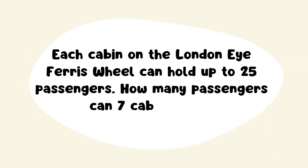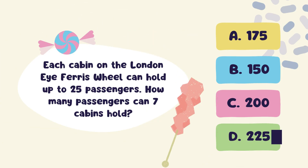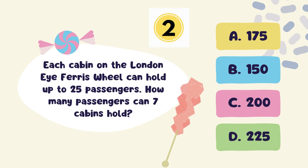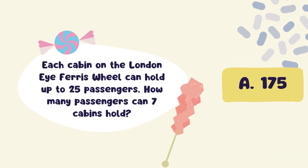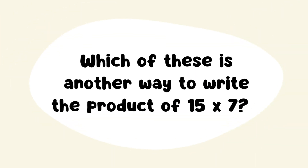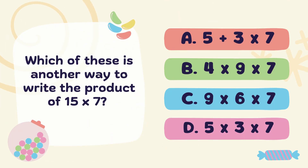12. Next Question. Answer: Option A. 175. Next Question: Which of these is another way to write the product of 15 x 7?